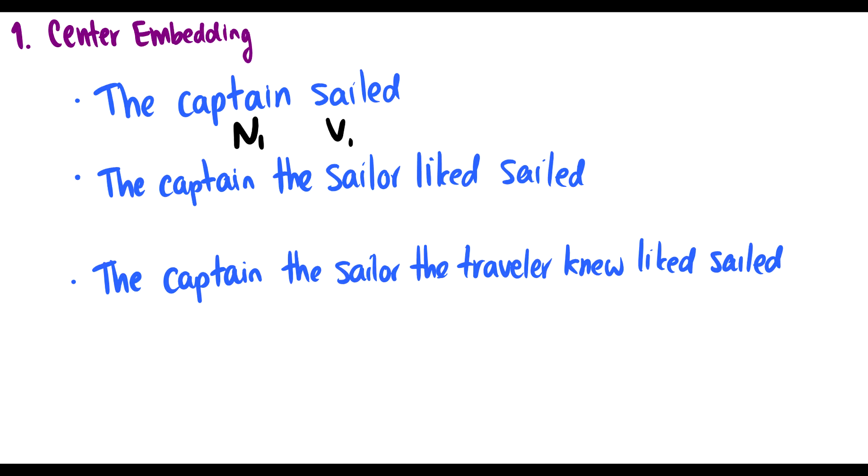We can say the captain the sailor liked sailed. Here we have the captain as noun one, the sailor is noun two. The sailor liked the captain, so this verb is linked to the sailor, and the captain sailed, so the captain is linked to sailed.